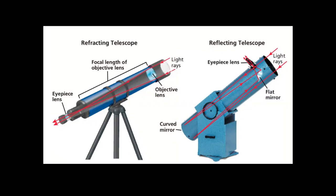Reflection happens when we use mirrors. In a reflecting telescope, we have a curved mirror at the bottom — a concave mirror — and also a flat mirror. At the eyepiece we use a lens to view the image. Light rays from far away objects reach the curved mirror at the objective end, which collects the light rays and reflects them onto the flat mirror, then the flat mirror bends the light toward the eyepiece lens. These are reflecting telescopes because light gets reflected, while refracting telescopes are so named because light mainly gets refracted through lenses.